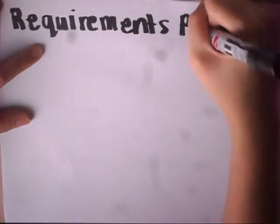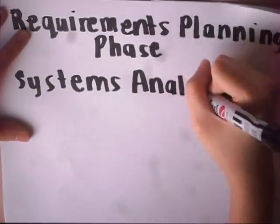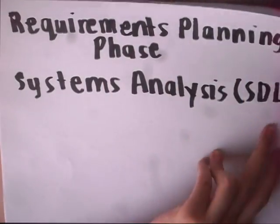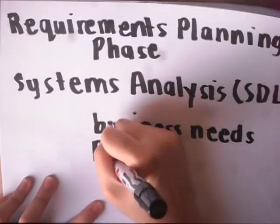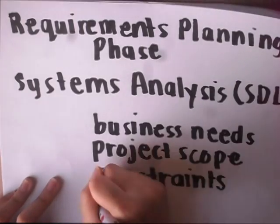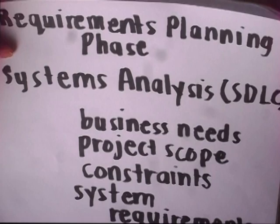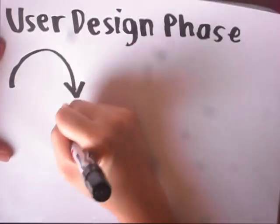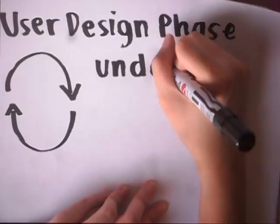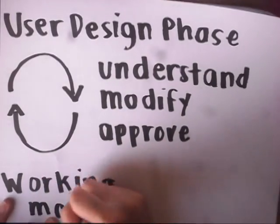The requirements planning phase combines elements of the system planning and systems analysis phases of the SDLC, or system development lifecycle. For the user design phase, users interact with systems analysts and develop models and prototypes.